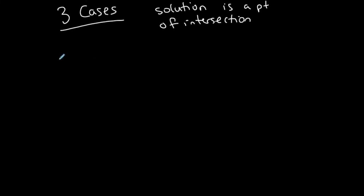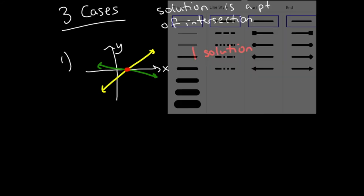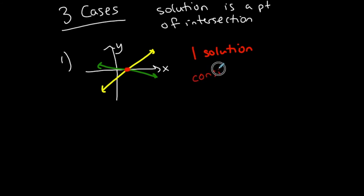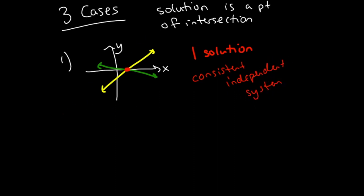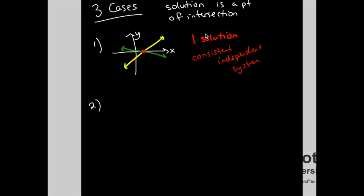If I have two lines, what are the three cases that can happen? Well, the first case is I graph the two lines and they intersect at one point — that's my solution. They intersect at one point, therefore this system has one solution. We call this a consistent independent system. There is one solution, one point of intersection for the two lines.